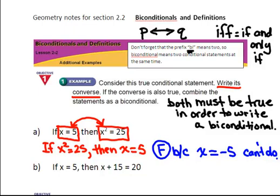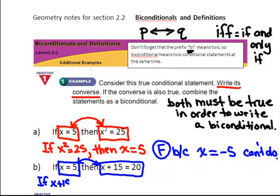If x equals 5, then x plus 15 equals 20. This is my hypothesis. And this is my conclusion. I'm going to switch these around. So I'm going to write, if x plus 15 equals 20, then x equals 5.